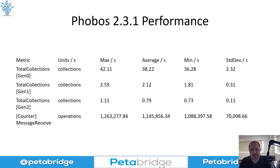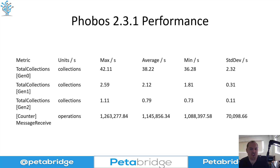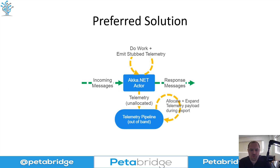On my machine, an uninstrumented Akka.NET actor without Phobos can do somewhere between 7 to 8 million messages per second. The same actor instrumented with Phobos is able to do 1.15 million messages per second — roughly operating at one-sixth of its prior performance. That's a fairly big impact just from adding telemetry. So what is our preferred solution? How can we work around the performance problems that telemetry introduces?